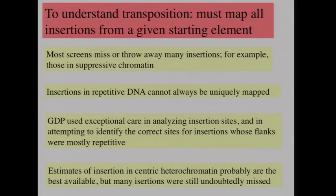Much of the existing data on transposition has problems, because most screens aren't really interested in collecting every insertion. Many go to very similar sites, and many don't use markers that can identify insertions in regions where chromatin is not conducive to gene expression. We can use very insensitive markers or work in the background of a suppressor of variegation. Another problem is insertions in repeated regions can't be uniquely localized, but by sequencing long amounts from both ends with high accuracy, we worked hard to localize as many inserts in repetitive regions as was possible.